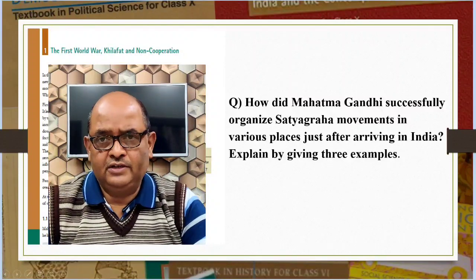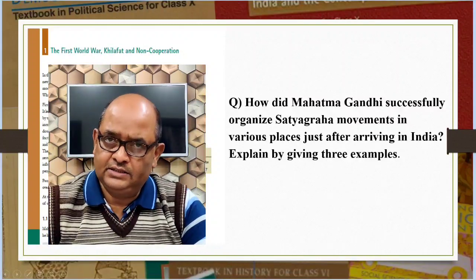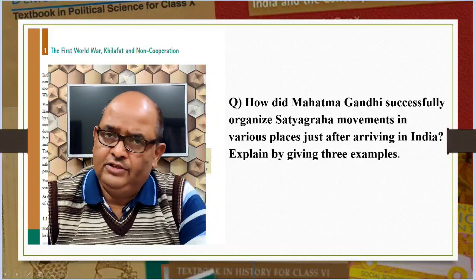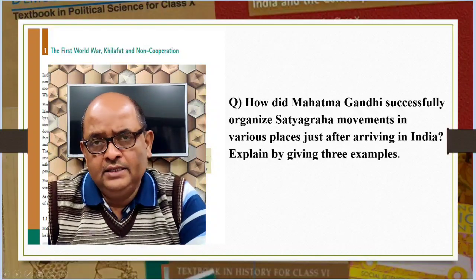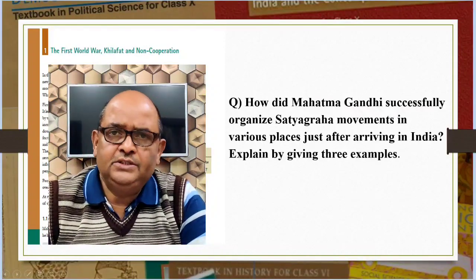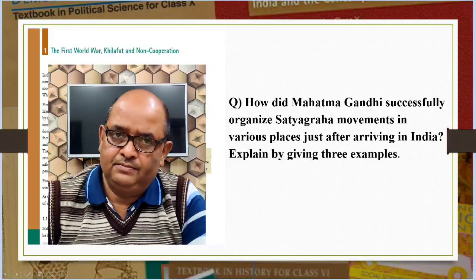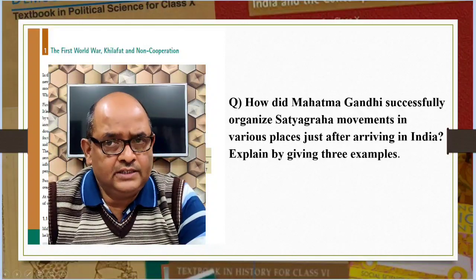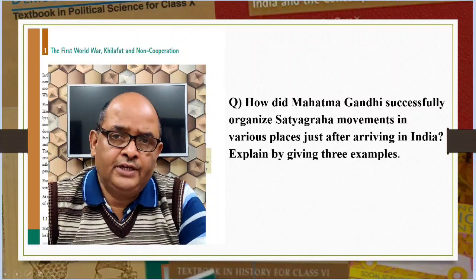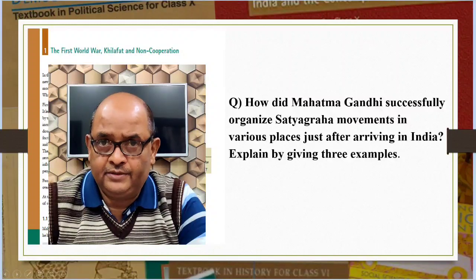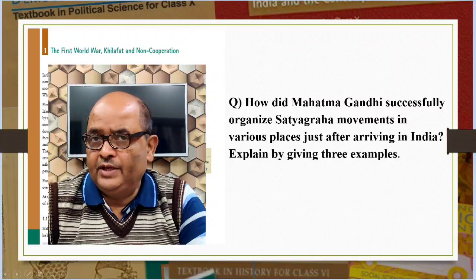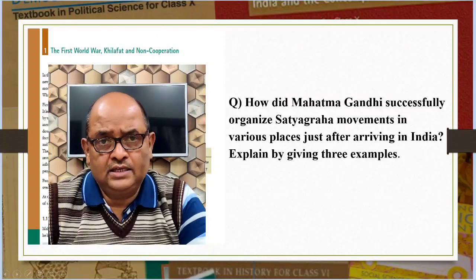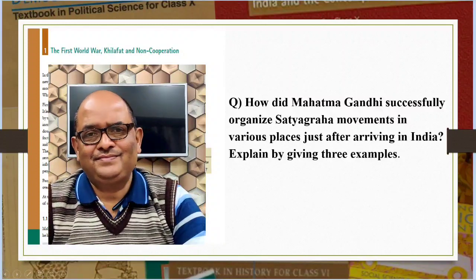How did Mahatma Gandhi successfully organize Satyagraha movements in various places just after arriving in India? Give three examples. After arriving in India, Mahatma Gandhi successfully organized Satyagraha movements in various places. First, in 1916 he travelled to Champaran in Bihar to inspire the peasants to struggle against the oppressive plantation system. Second, in 1917 he organized a Satyagraha to support the peasants of the Kheda district of Gujarat, who were affected by crop failure and plague, and could not pay their revenue — they demanded that revenue collection be relaxed. Third, in 1918 he went to Ahmedabad to organize a Satyagraha movement amongst cotton mill workers.